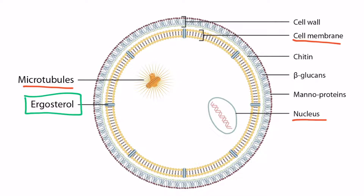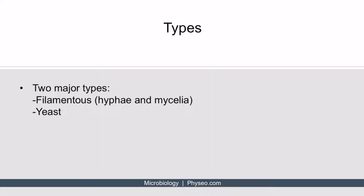Another difference between human cells and fungal cells is that fungi have a cell wall. This is composed of chitin, beta-glucans, and mannoproteins. The synthesis of beta-glucans is also an important drug target and can be inhibited by echinocandins.